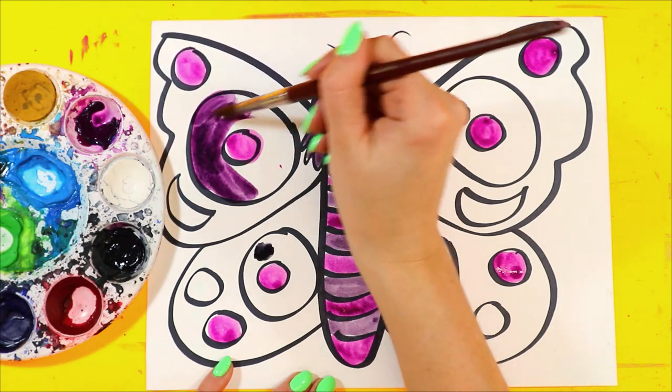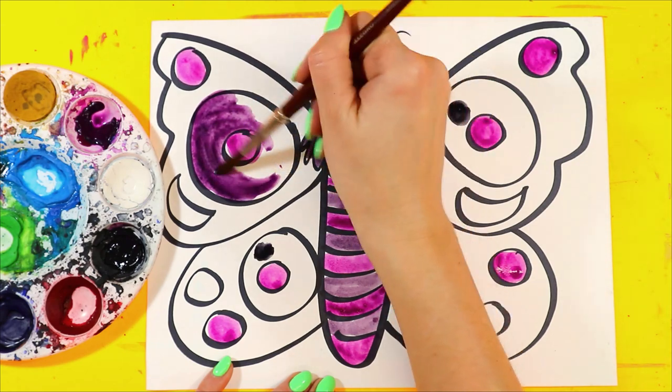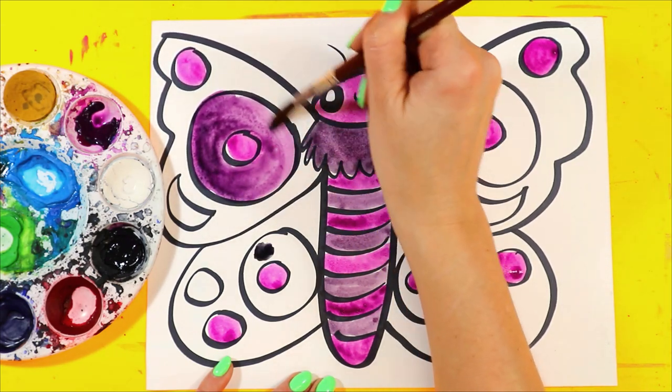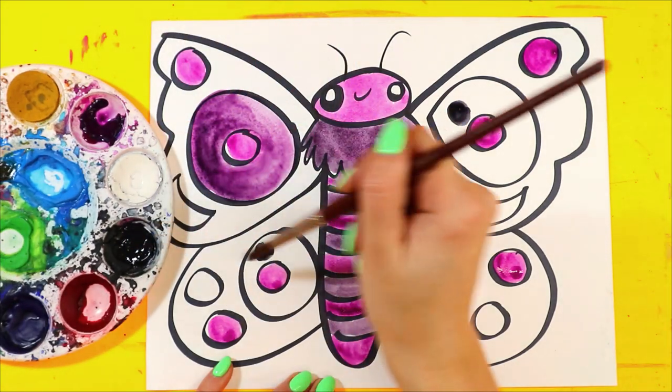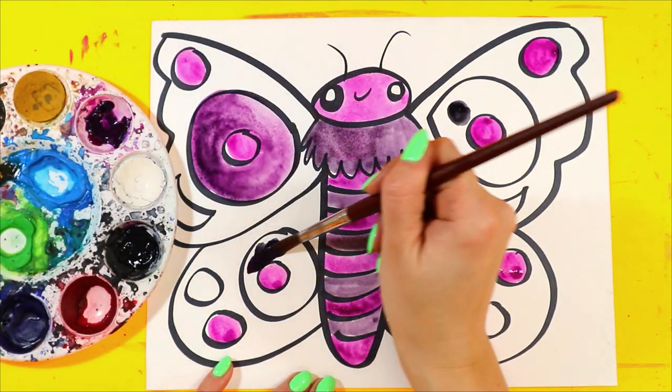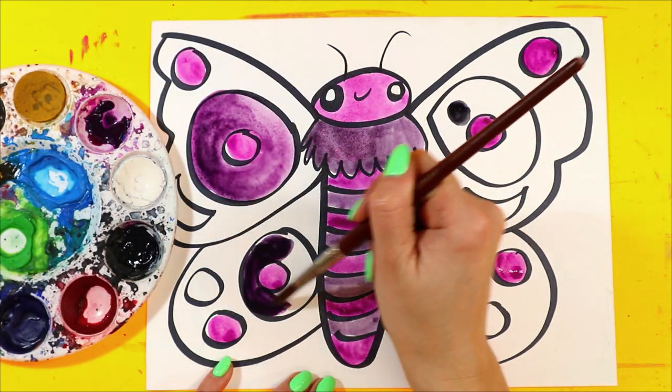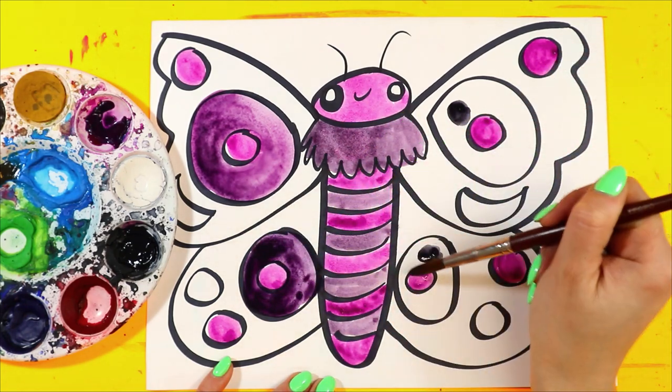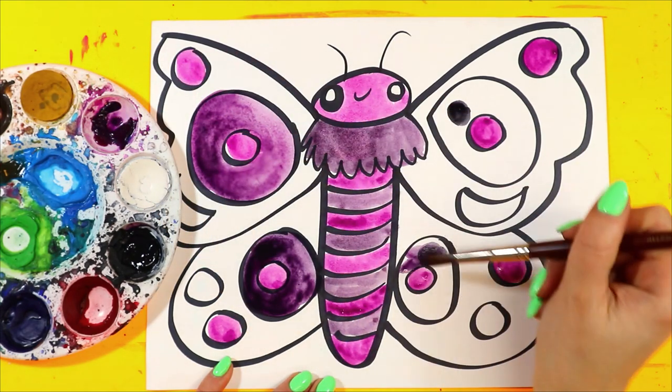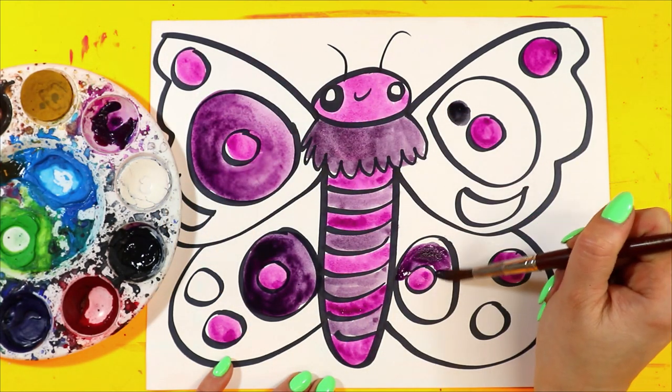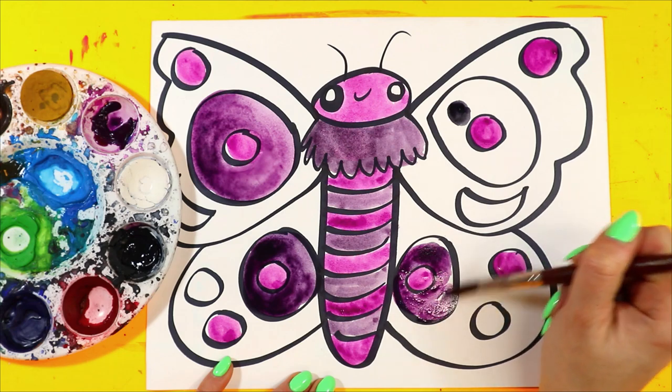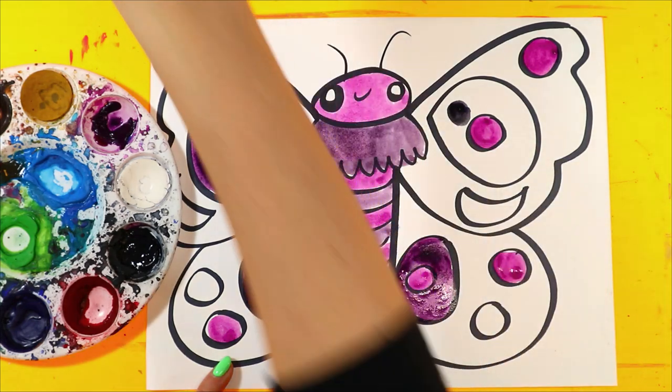I'm using water because it's watercolor paint to help it get more liquidy and go farther. So it's getting a little dry, just add a little bit more water. Whatever I do on one side, I do on the other. That's symmetry and balance.